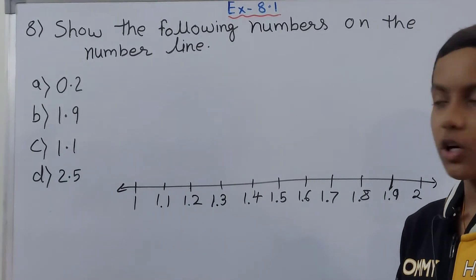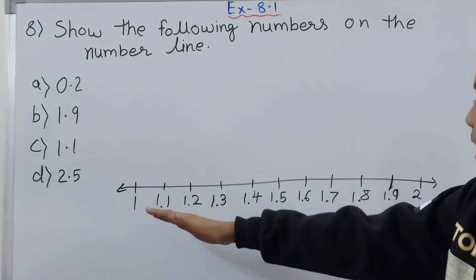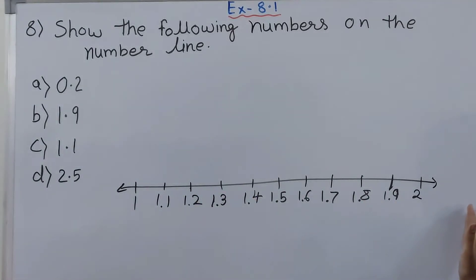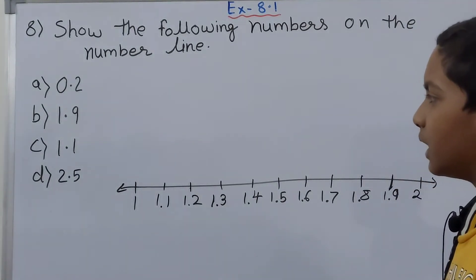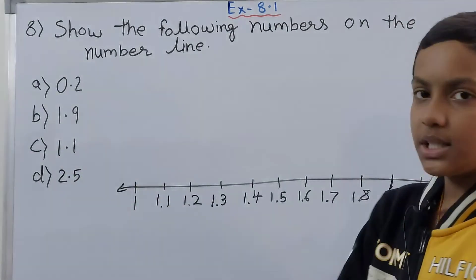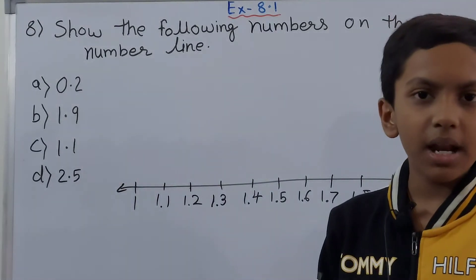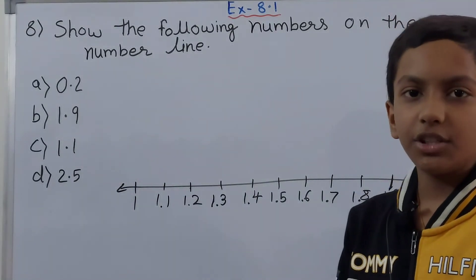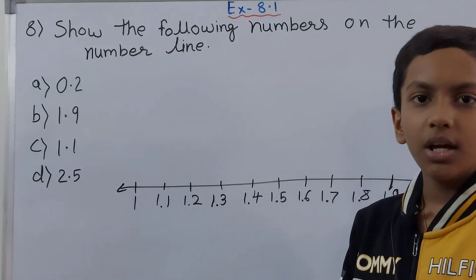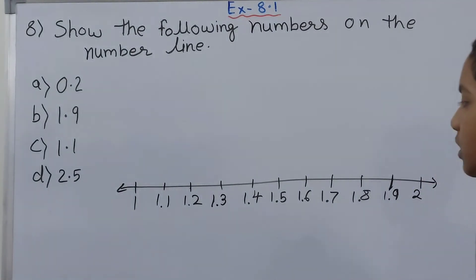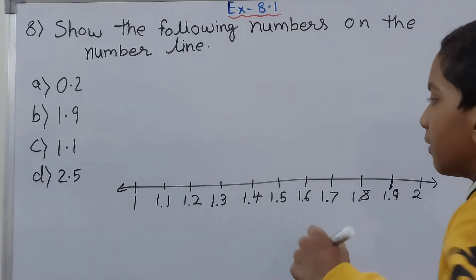Friends, now let us move on to the C part. To shorten the process, I did not erase the previous number line because the C part is also related to this number line only. As you can see, we are having 1.1. The 2 whole numbers over here: 1 is the first whole number and after 1, it is 2 as the whole number. So here the 2 whole numbers are 1 and 2. That is why I did not erase this number line. Now we can simply locate 1.1 here.